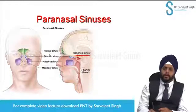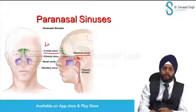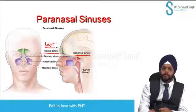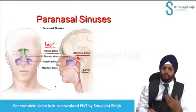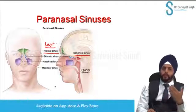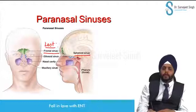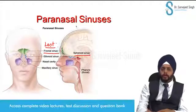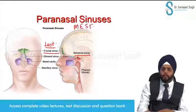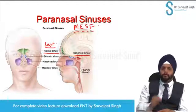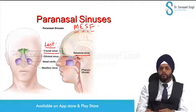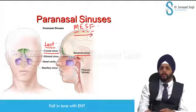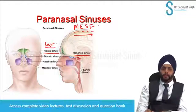The last to develop is the frontal sinus. It starts developing after two years of age. So the sequence is MESF: Maxillary, Ethmoid, Sphenoid, Frontal. First to develop is the maxillary sinus; last to develop is the frontal sinus.